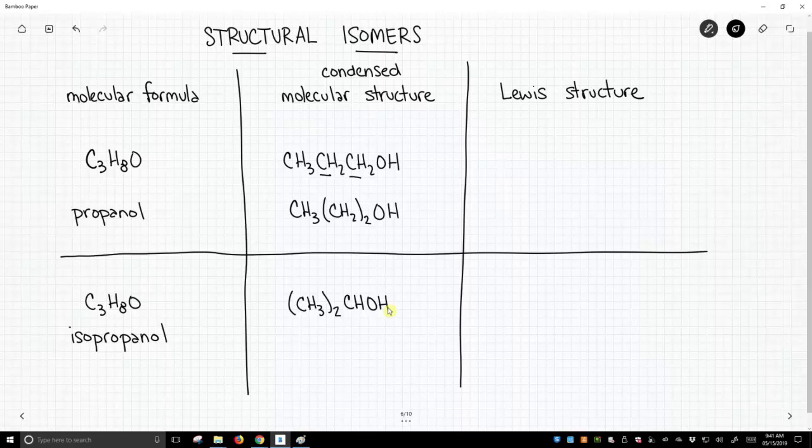Let's draw these Lewis dot structures. For the top structure, for propanol, we have a carbon attached to three hydrogens. There's our CH3 on the left. Continuing towards the right, we have a CH2, so that carbon is attached to another carbon that has two hydrogens.